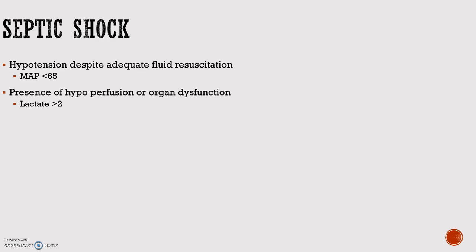Sepsis occurs when chemicals released in the bloodstream to fight an infection trigger inflammation throughout the body. This can cause a cascade of changes that damage multiple organ systems, finally leading to septic shock and then death. Septic shock occurs in a subset of patients with sepsis and comprises underlying circulatory, cellular, and metabolic abnormalities associated with increased mortality. Septic shock is defined by persistent hypotension despite adequate fluid resuscitation, requiring vasopressors to maintain a mean arterial pressure of 65 or higher. Additionally, the serum lactate level will be greater than 2. These patients also become acidotic and have an altered mental status, which may require mechanical ventilation.